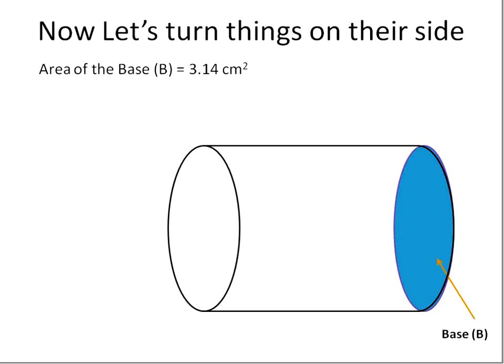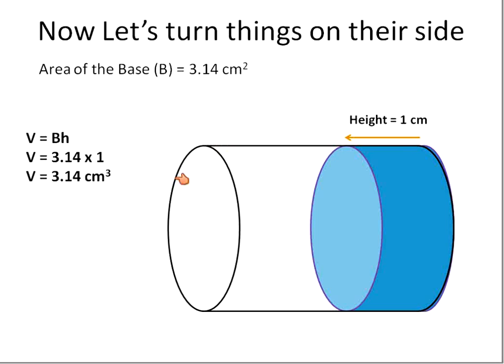But now we're going to make it into three dimensions. So we know the area of the base is three point one four. Now we're going to find the volume of the cylinder. So we have a height of one. And when we have the height of one, again, we're multiplying area of the base times the height. Three point one four times one will give us three point one four. But it's no longer squares on the flat base, but now it would be cubes.